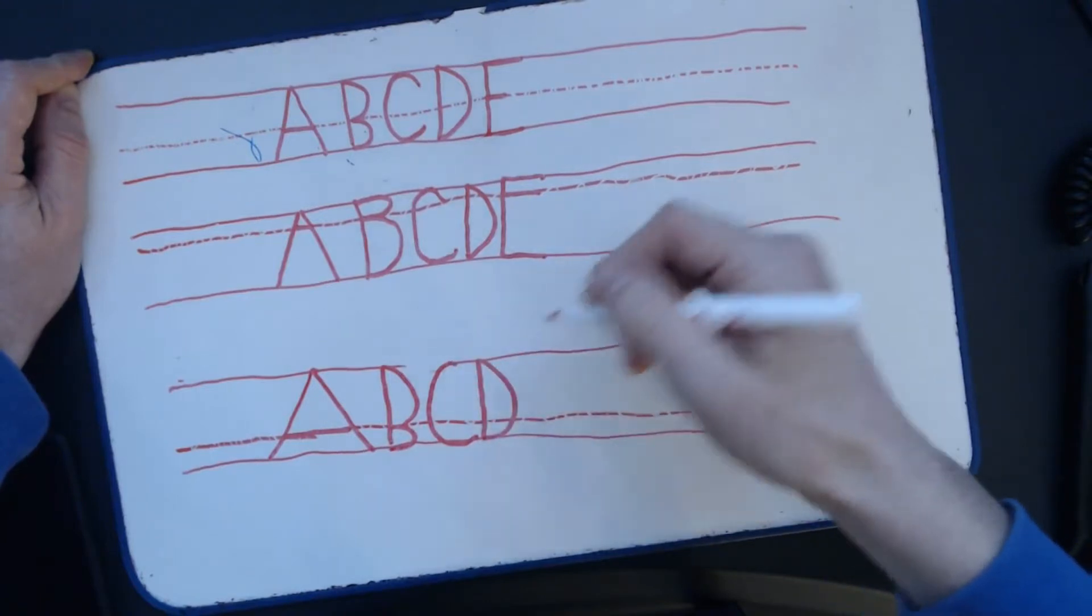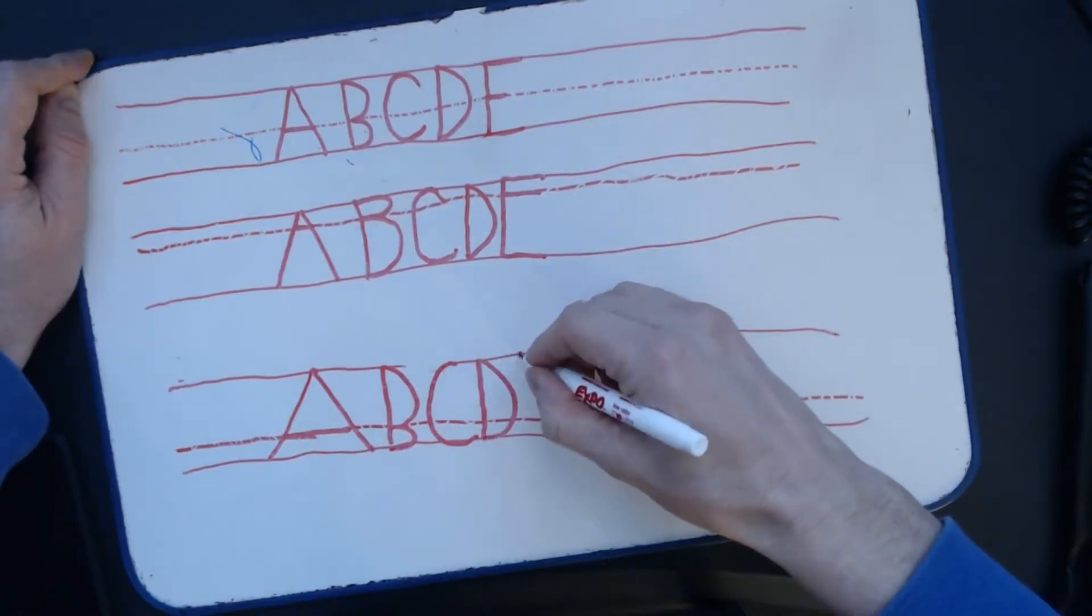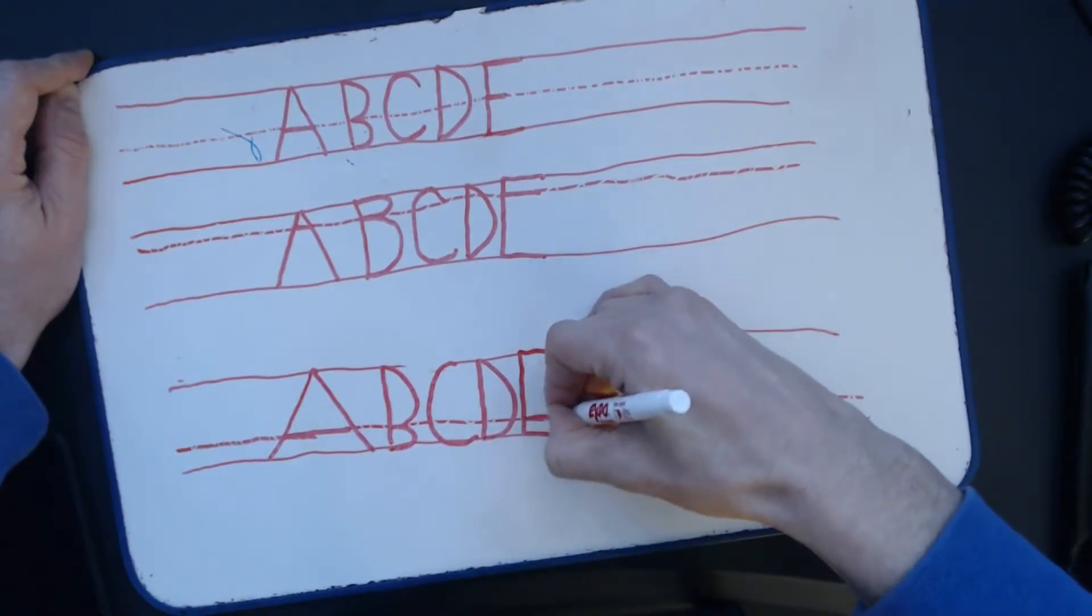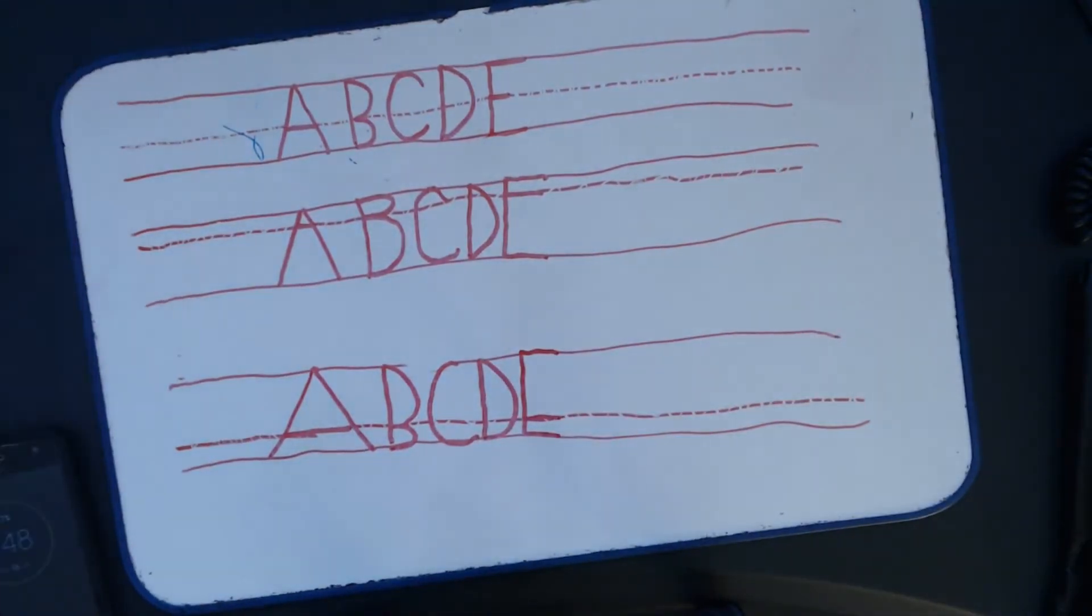Again, the C and D aren't going to look extremely different, but the E and the A and the B and anything that kind of connects or has a horizontal stroke like that, it's going to really look kind of interesting.